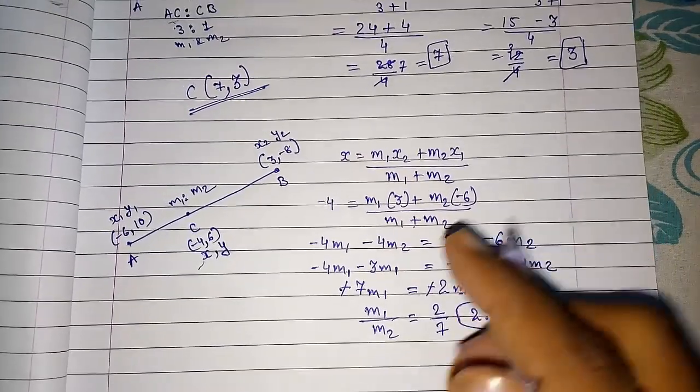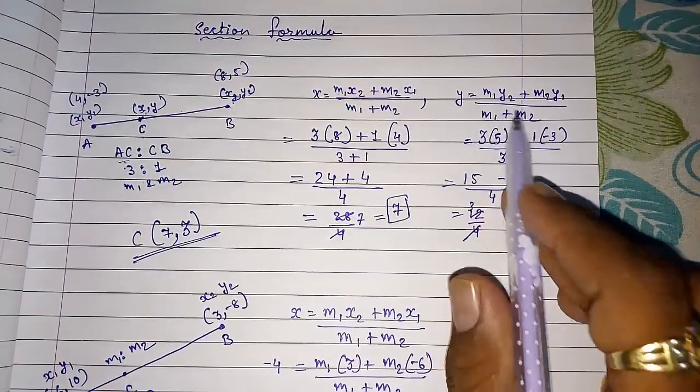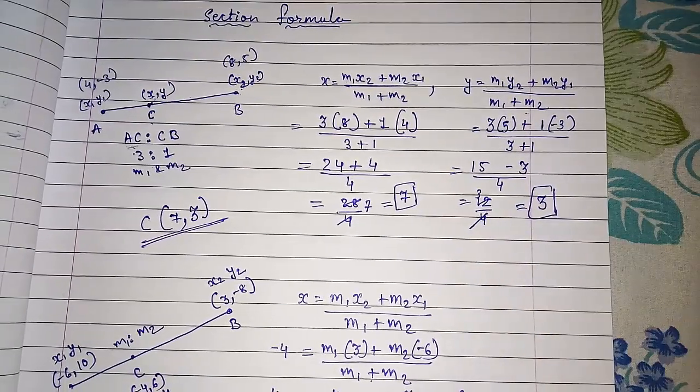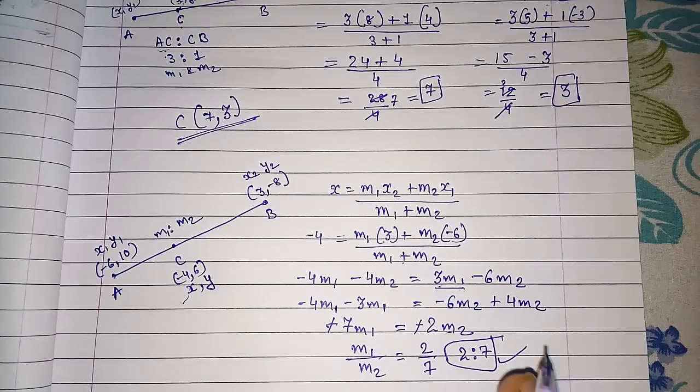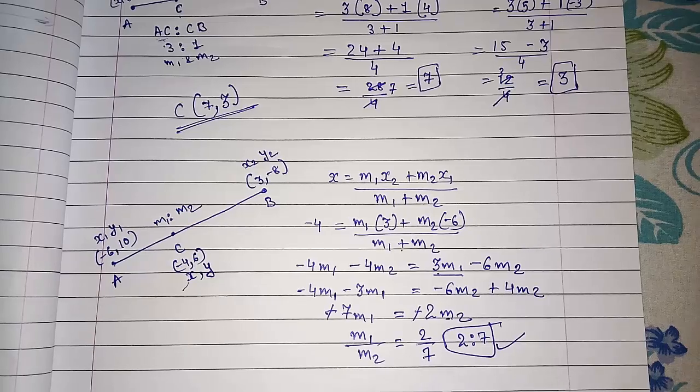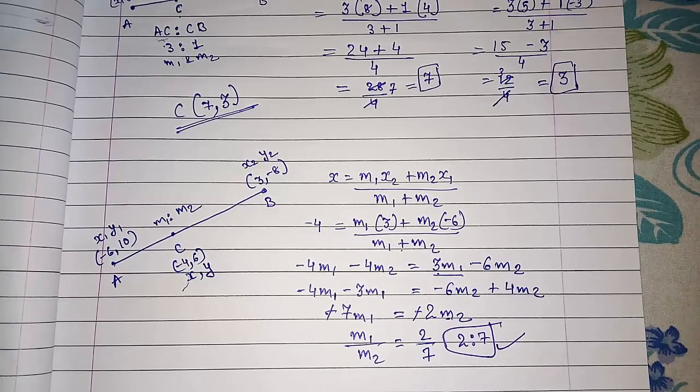Now if you try to put all these numbers in Y also, then again here you will get the ratio 2 is to 7 only. That you can solve by yourself. Thank you so much for watching my video. If you like it, please subscribe to my channel so that I can bring more such videos for you. Thank you so much.